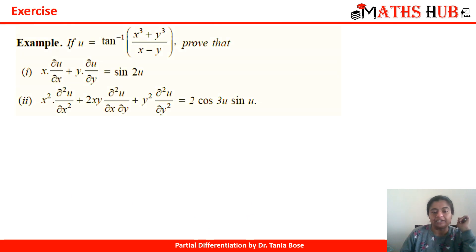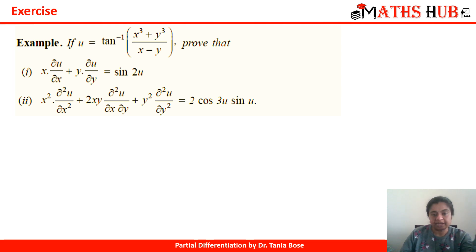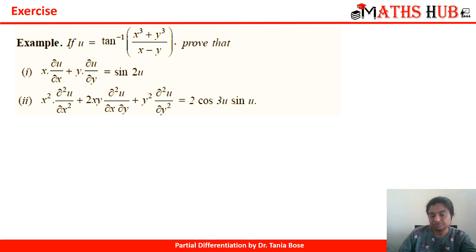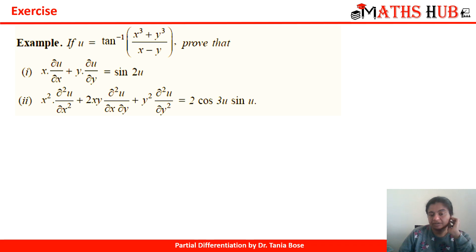Finally, try this problem: u = tan⁻¹[(x³ + y³) / (x − y)]. For the first part, simply apply Euler's theorem. For the second part, follow the same approach as the previous question — differentiate the Euler equation with respect to x, then with respect to y, multiply the equations by x and y respectively, and manipulate to get the result equal to 2cos³u · sin u.